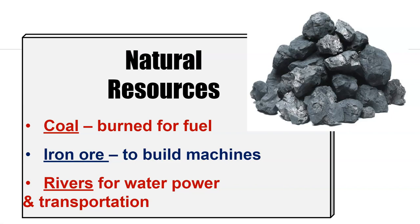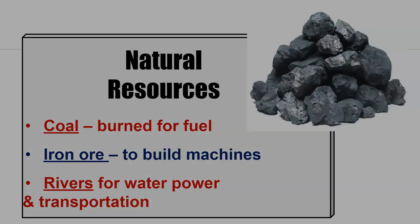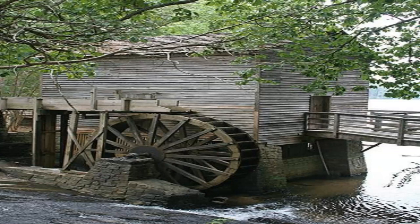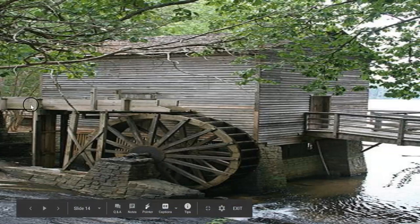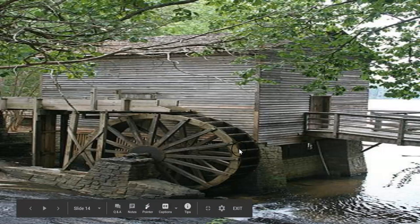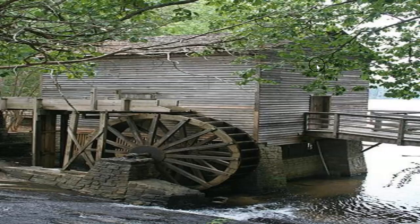The natural resources England had specifically were coal, burned for fuel; iron ore, a natural resource to build machines; and rivers for water power and transportation. Coal was significantly used in the railroad system to power steam-powered trains. You can also see a water wheel here, where energy from the motion of water in a stream or lake is converted into electricity and power in a generator.